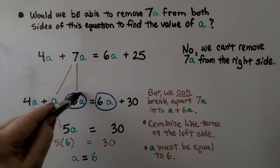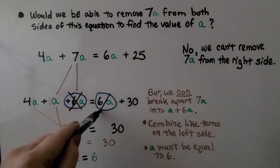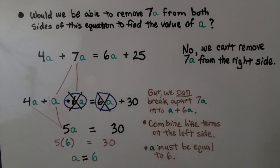Then we can remove the 6a from both sides and we have a 4a plus an a that makes 5a and we have 5a is equal to 30.